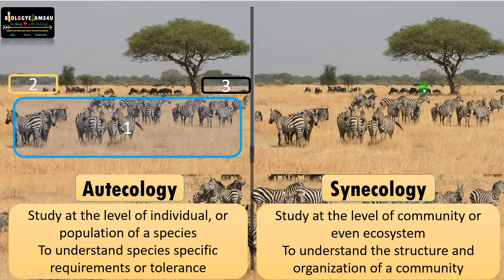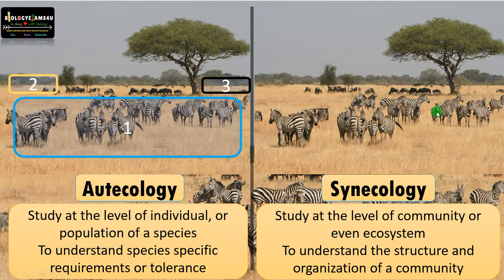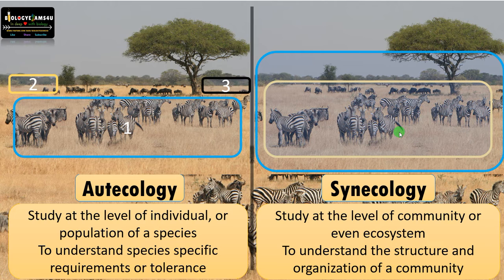Whereas synecology is a study at the level of a community or even an entire ecosystem — this entire grassland ecosystem. The study of different species and their interactions altogether is synecology. It aims to understand the structure and organization of a community that comprises different species and their interactions. So synecology is community study or community ecology.